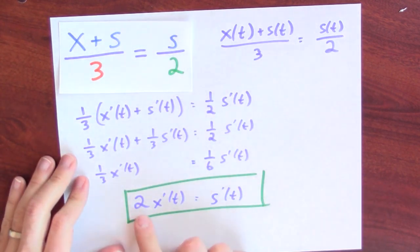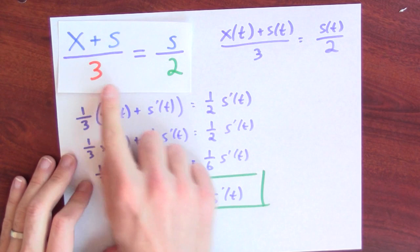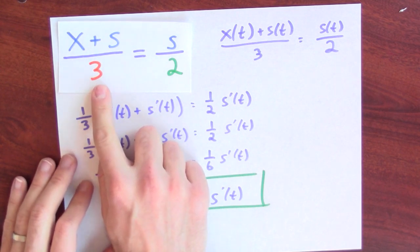In fact, the speed with which your shadow is growing is exactly twice the speed with which you're walking. Assuming, of course, that, you know, you're 2 meters tall and the lamp post is 3 meters tall.